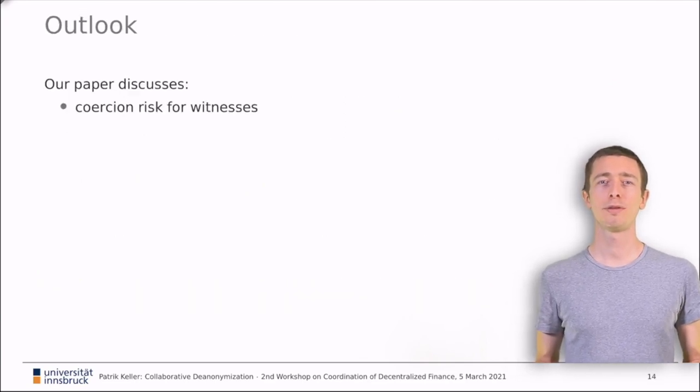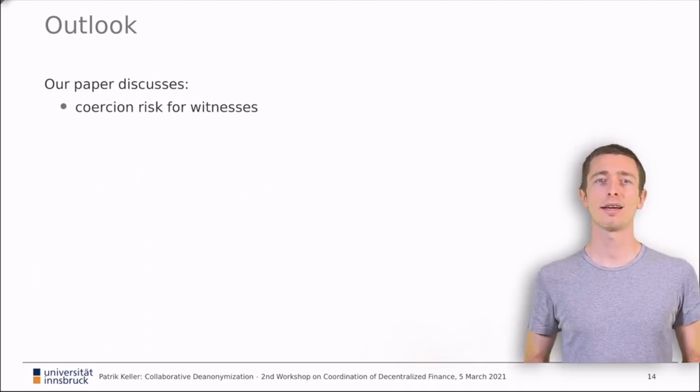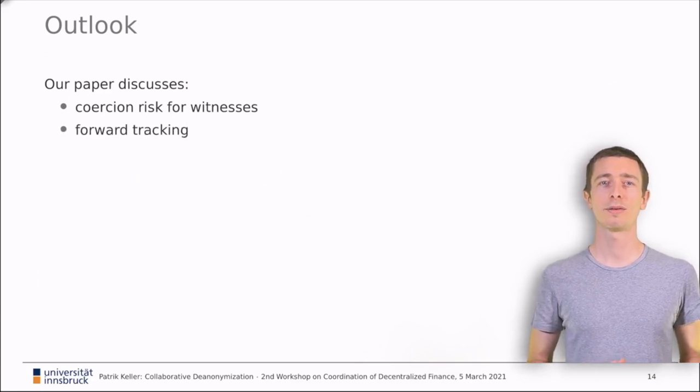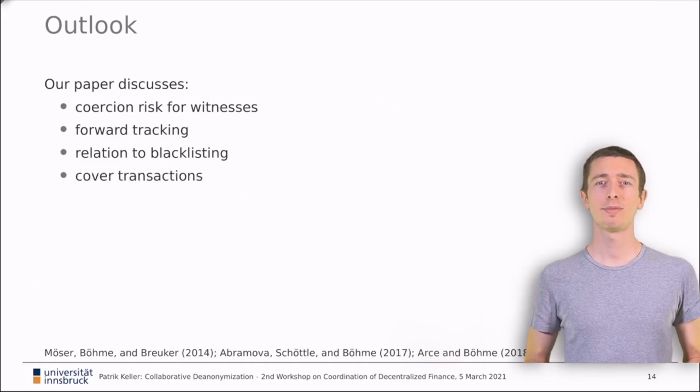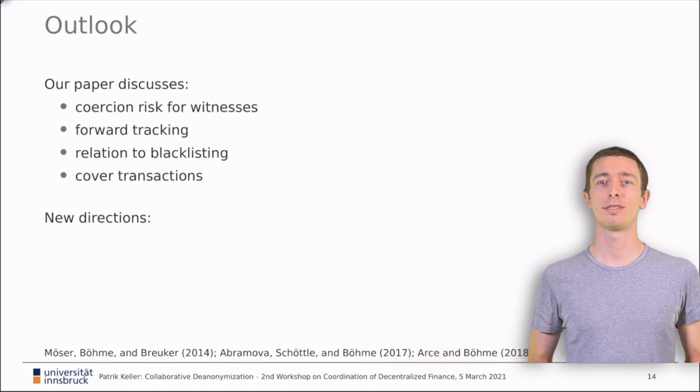In our short paper, we elaborate on that a bit further. We also sketch how the tracing could look in the other direction, so forward tracking instead of backward tracking, as we used it in the example earlier. We relate our work to other enforcement techniques, such as blacklisting, and we touch on how the police might obfuscate their de-anonymization requests. Even more interesting for the upcoming discussion might be the aspects that we did not touch in this paper.